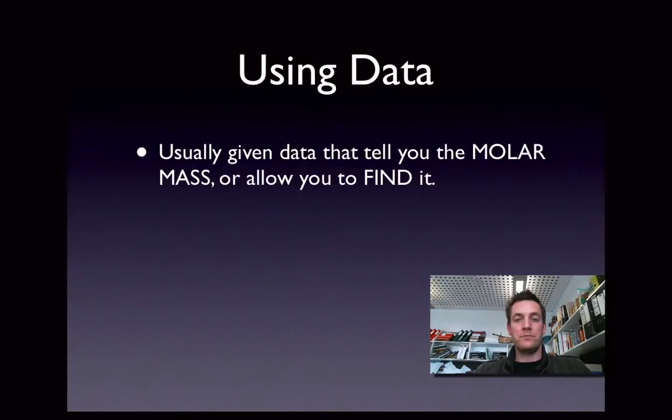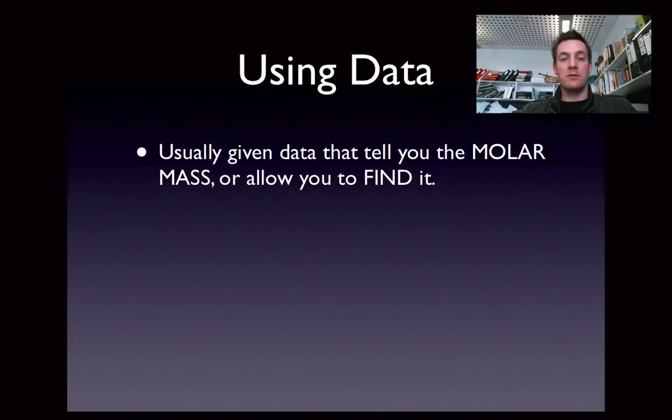What we need to do is use the data that we're given to find a molar mass. Now why should we want to do this? Well, because if we know that our empirical formula is CO2H, and if we added up all the atomic masses here of 12 and 16 times 2 and 1, then we'd find that it would equal 45.